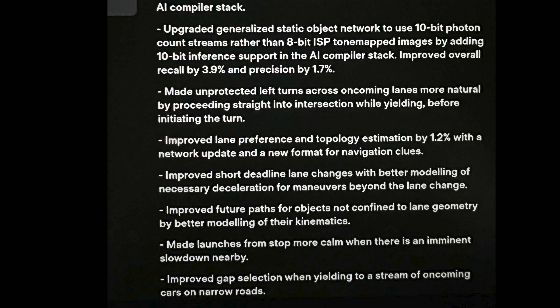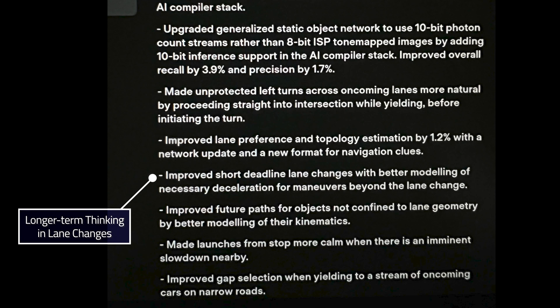Number five: improved short deadline lane changes with better modeling of necessary deceleration for maneuvers beyond the lane change. To me, this is saying that when doing lane changes the car is going to have better long-term thinking. It's not just going to try to understand what's necessary to shoot the gap between cars — it's going to predict what it needs to do once it's in that lane so you don't shoot the gap and then slam on the brakes because there are cars there. Should be better long-term thinking.